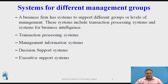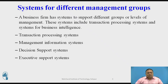A business firm has systems to support different groups or levels of management. These systems include transaction processing systems and systems for business intelligence. First is the transaction processing system, supporting the operational level of employees. Second is the management information system, supporting managers. Third is the decision support system, helping managers and senior executives in decision making. Fourth is the executive support system, supporting the executives of the organization.